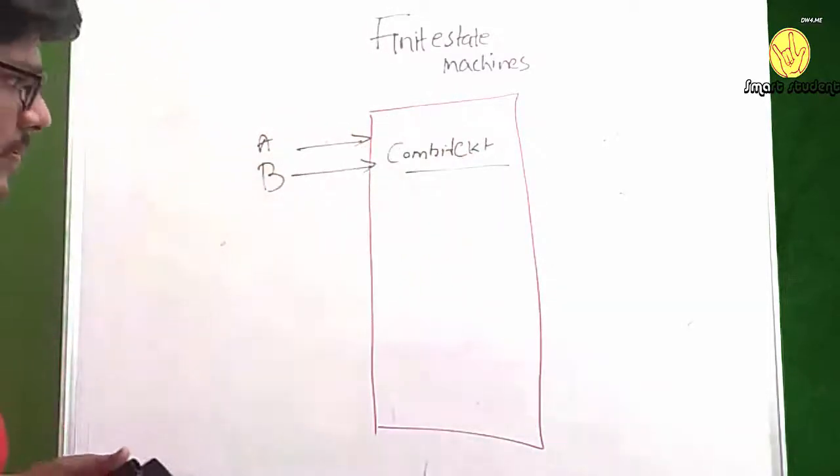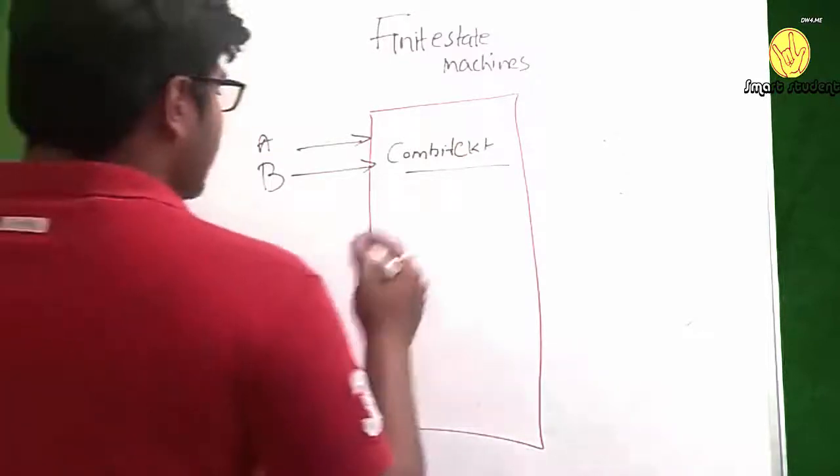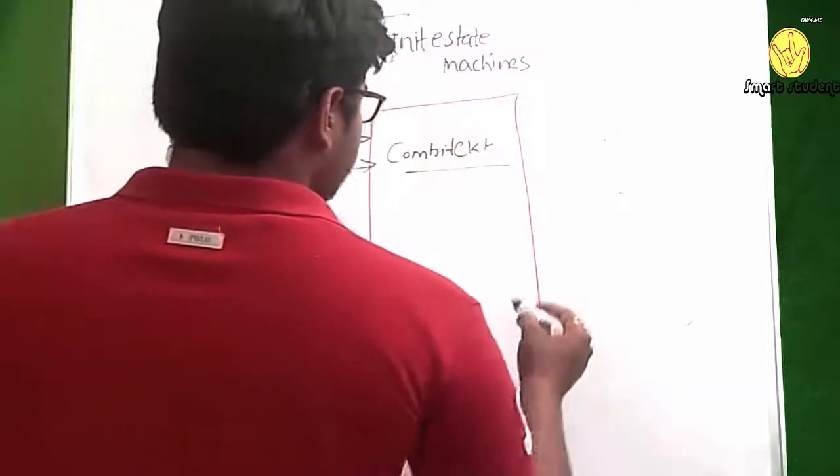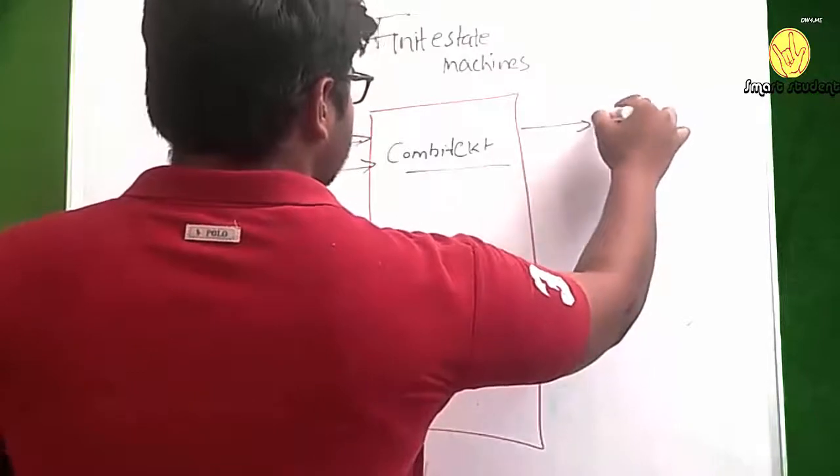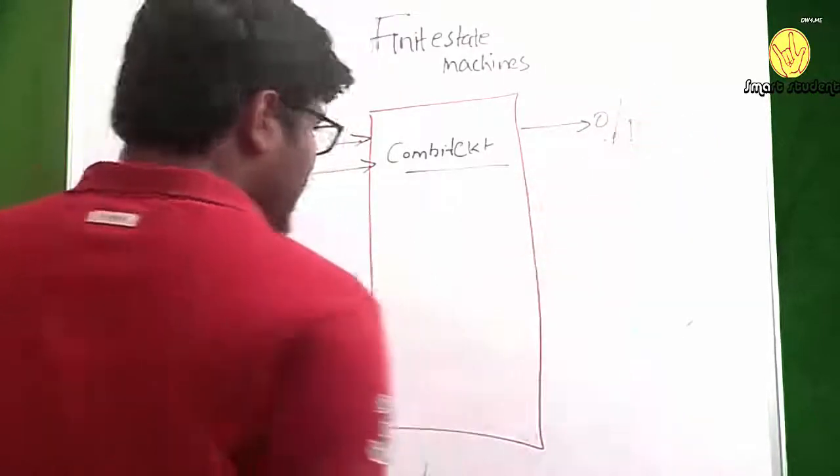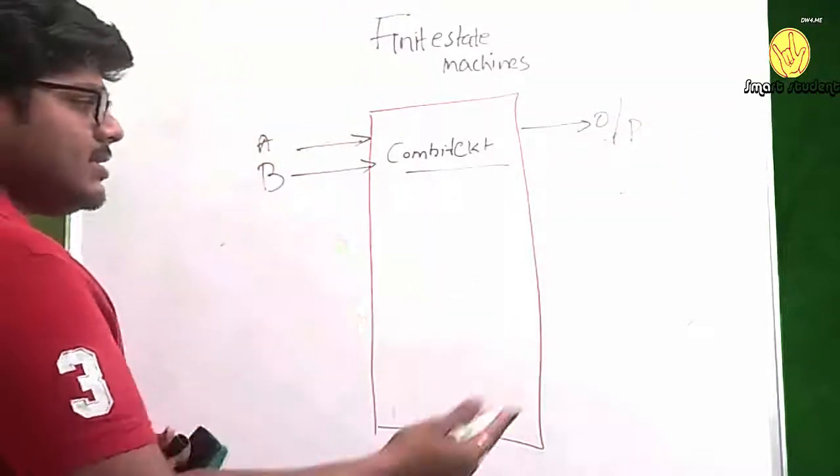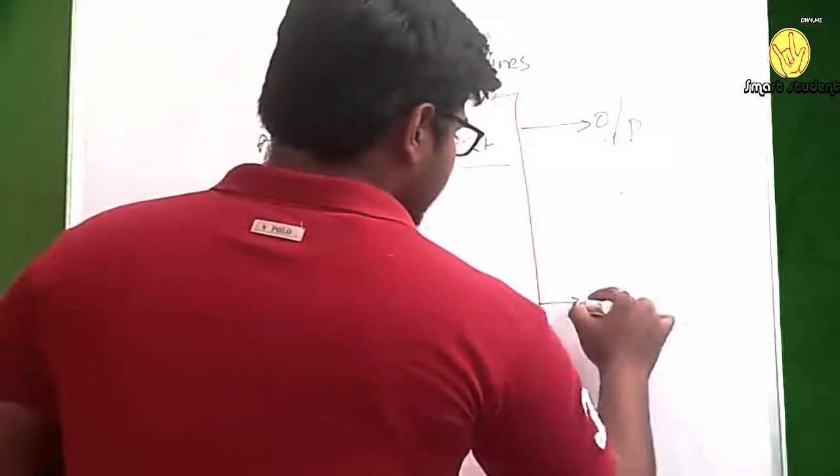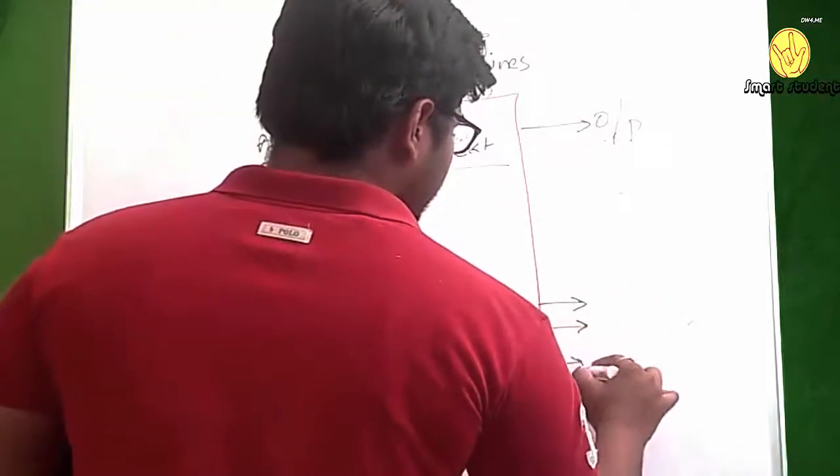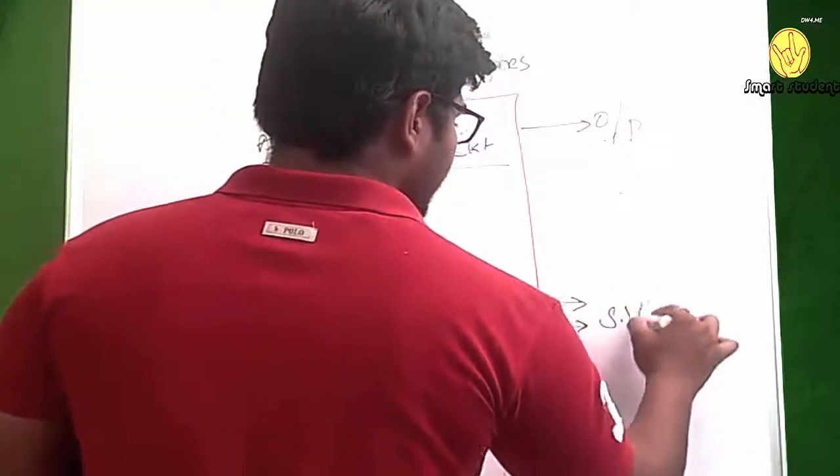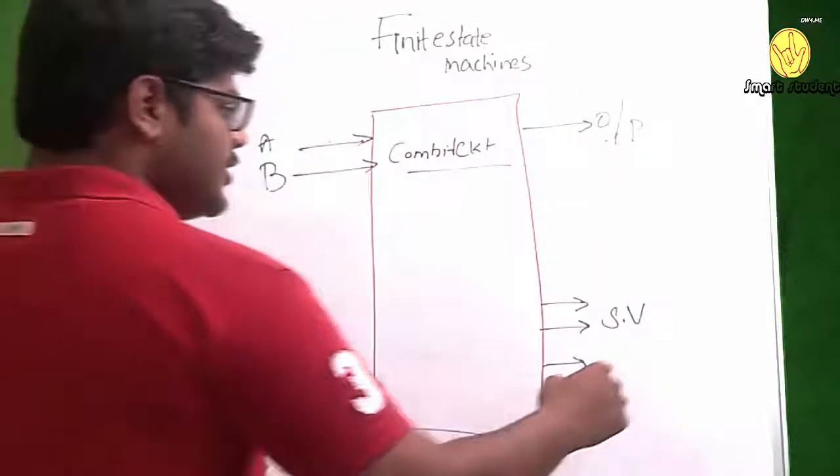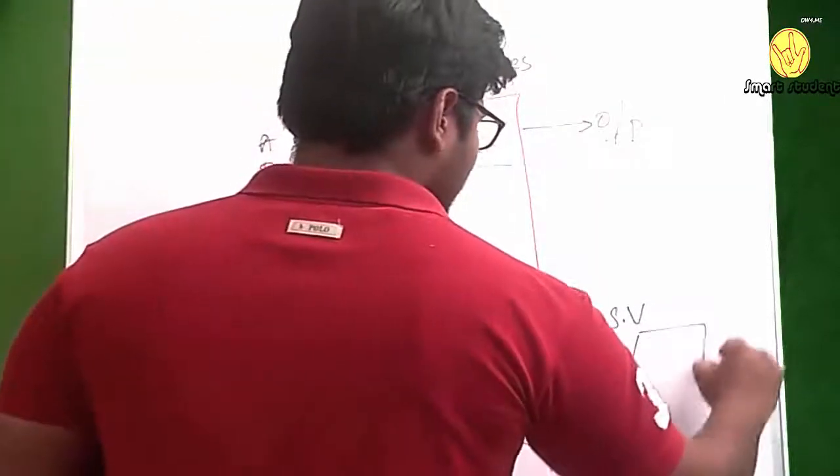Whatever the external inputs you are giving, for those external inputs you will get outputs, and the system transitions into certain states. These are called state variables.